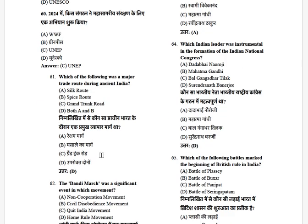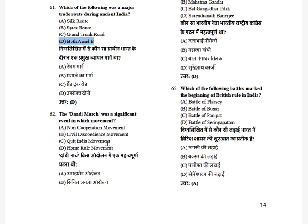Which of the following was a major trade route during ancient India? The options are: Silk Route, Spice Route, Trunk Route, and both A and B. The answer is both A and B — the Silk Route and the Spice Route.